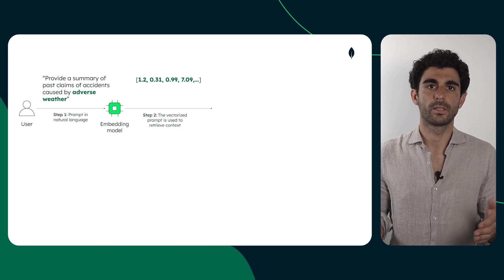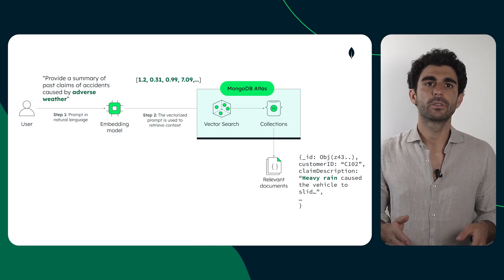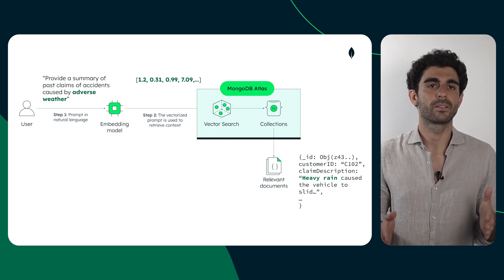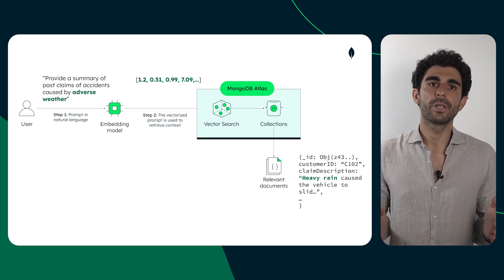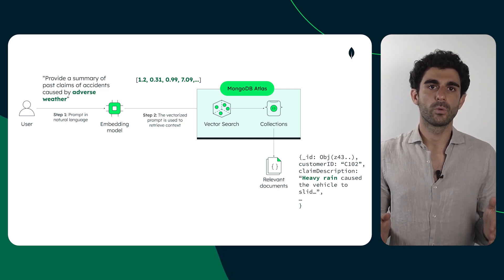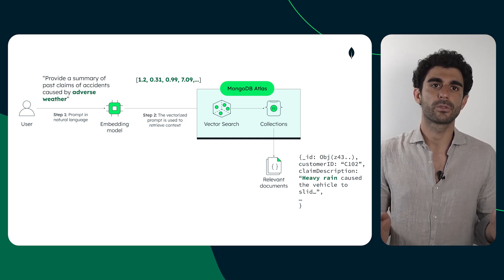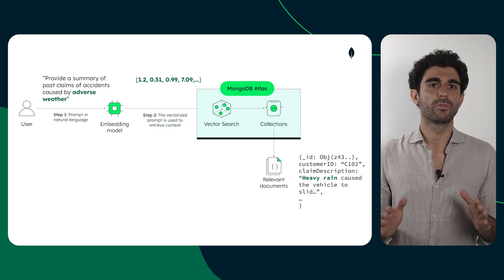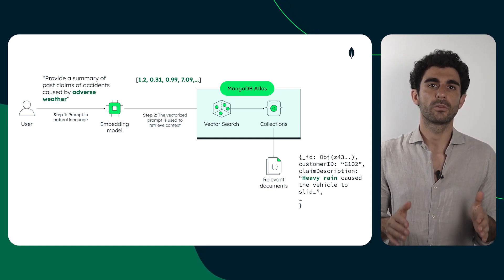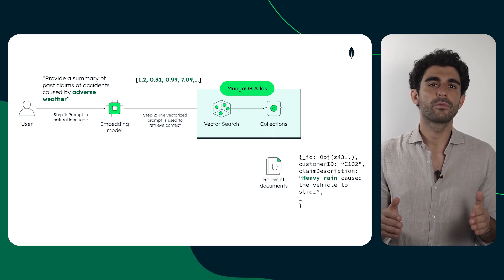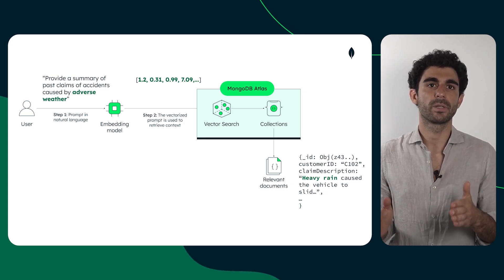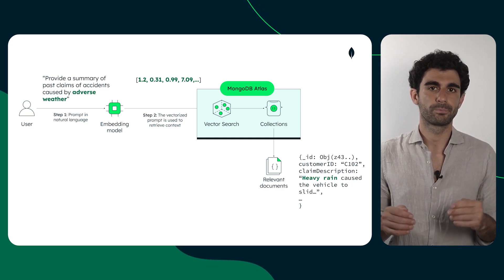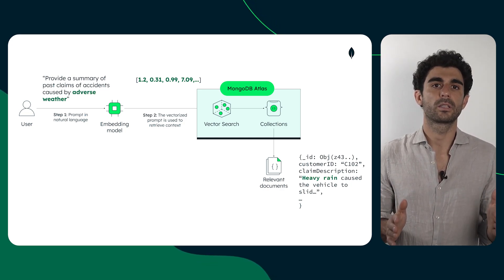The prompt is embedded and pushed to Atlas. The relevant documents are retrieved, and now we gain a clear understanding of what 'relevant' entails in this context. Highlighted in green in the user's question, we see a reference to adverse weather. In the document retrieved by vector search, we notice a mention of heavy rain in the claim description field. This is the key point of RAG: preserving the semantic meaning of the query. We're not looking for an exact match as we would expect from a regular database search — vector search returns vectors that embed the conceptual similarity. This marks a significant paradigm shift.